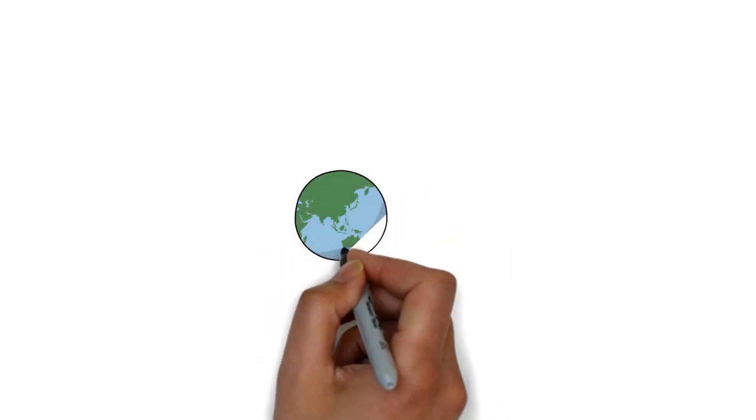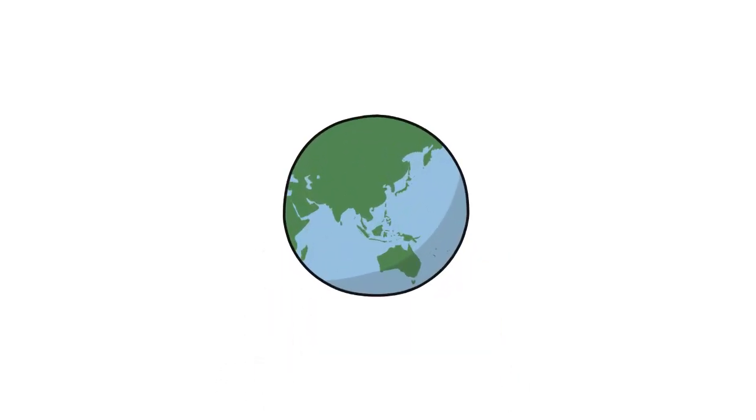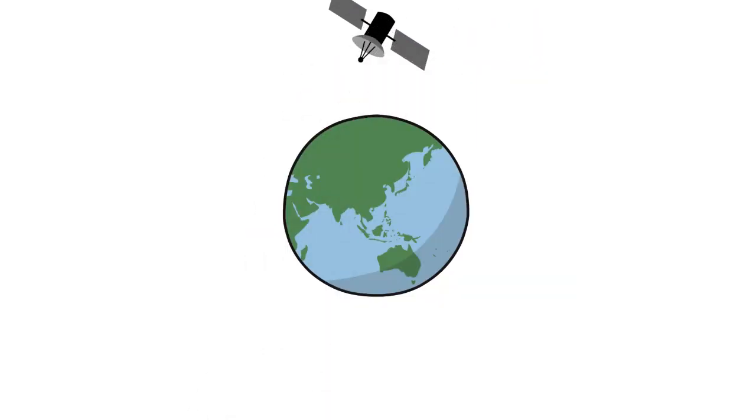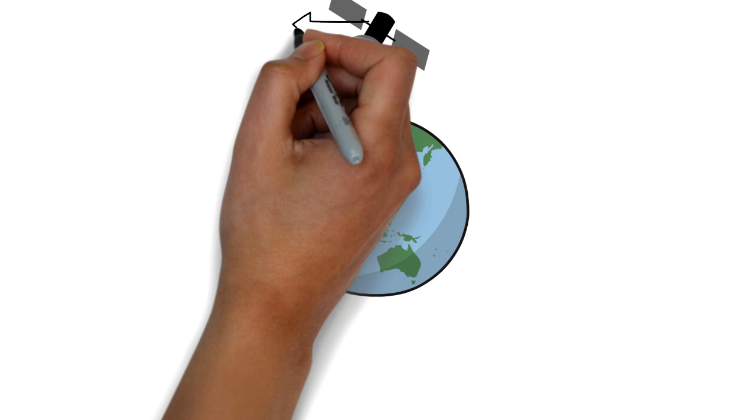Let us derive the formula of Critical Velocity of a Satellite orbiting around the Earth. Suppose a satellite is orbiting Earth with Critical Velocity Vc.